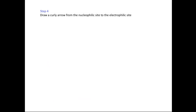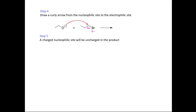We now draw a curly arrow from the nucleophilic to the electrophilic site. Here's the double-headed curly arrow taking electron density from the oxygen and attacking the carbon. Because we're using a charged nucleophile, the oxygen atom will become uncharged in the product as we're taking electron density away from it.